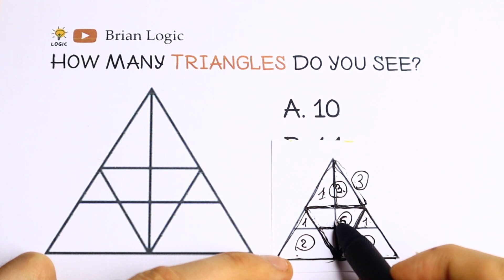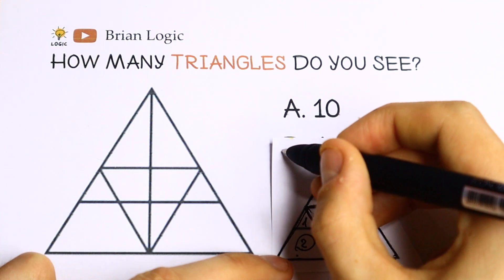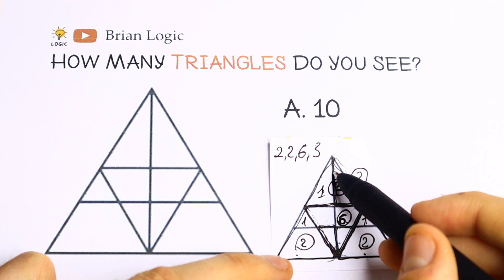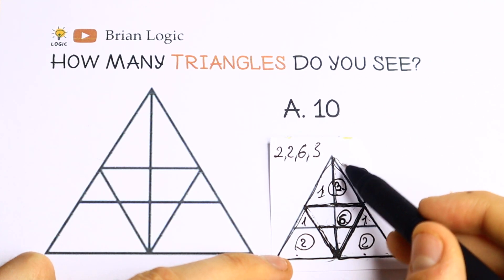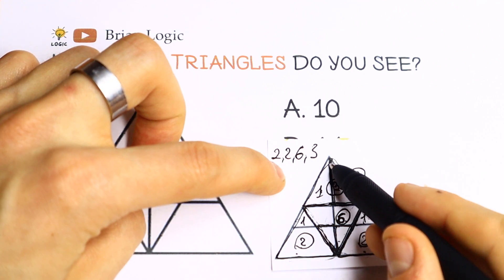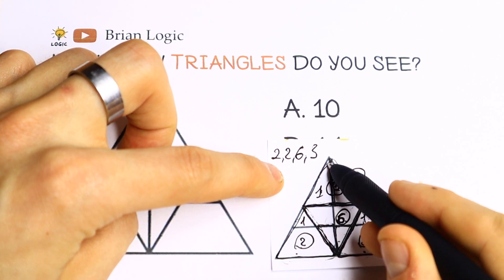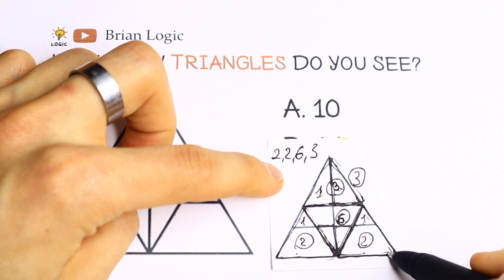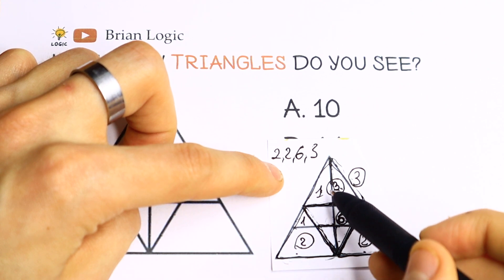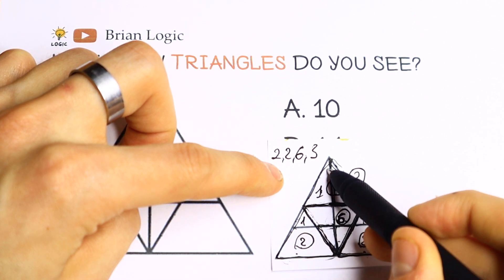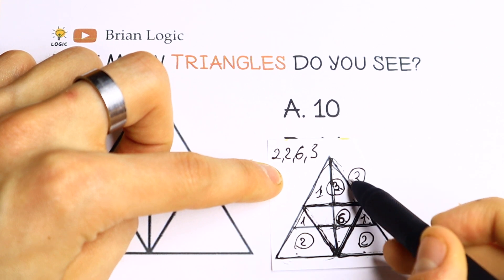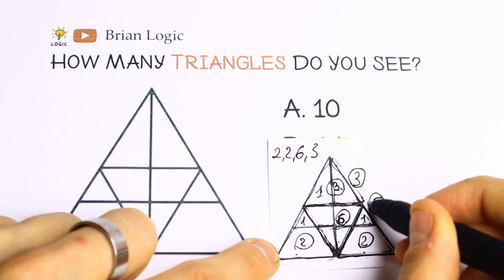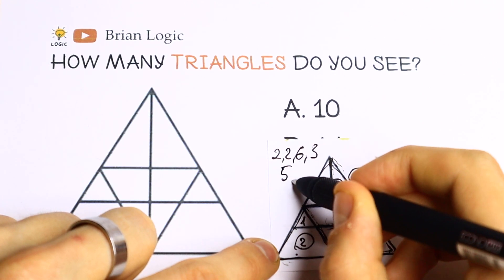So we have two, two, six and three. But let's go to this line — this line divides the giant triangle in two. So right here we will have one, two, and if we add these two parts we will have three. But we will also have this triangle — four and five. So this line divides to five triangles, and we need to add five to the others.